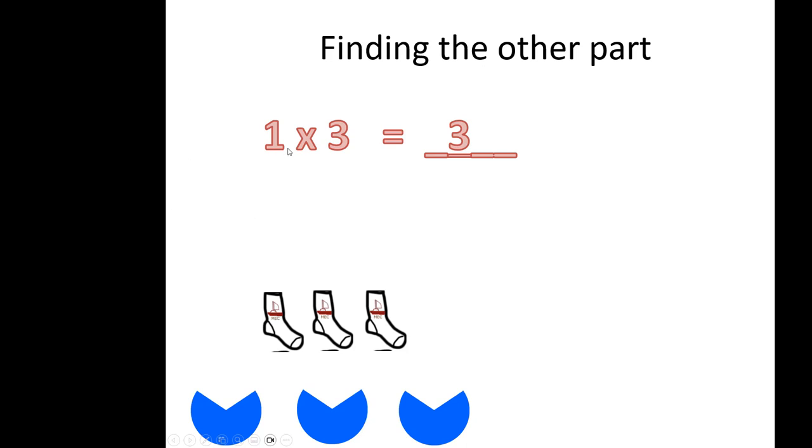We find the whole by multiplying the parts one and three, and if we're finding the whole, the order doesn't matter. But if we know the whole, order matters.